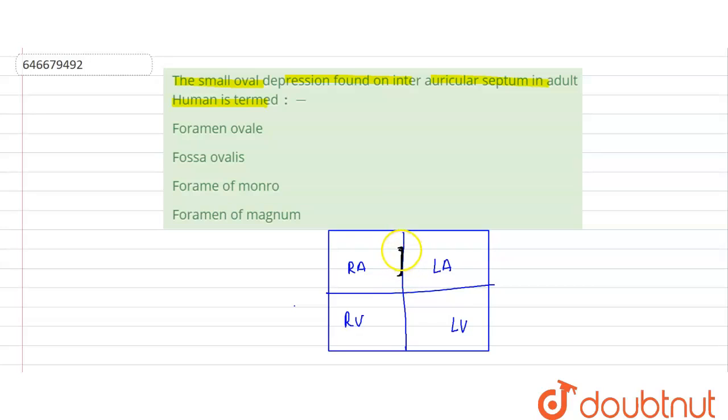There is a depression present on the side of the right auricle like this. So this is the depression that is found on the wall, and this depression is called as the fossa ovalis.